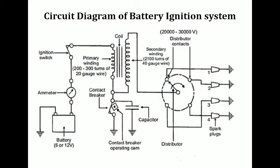Today I am going to discuss the working of the battery ignition system. This is the circuit diagram of the battery ignition system. The main components are the battery, ammeter, ignition switch, and within the ignition switch and the primary winding there should be a ballast resistor, primary winding, secondary winding, contact breaker point, capacitor, distributor, and also the spark plug.